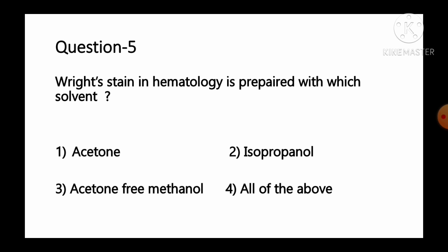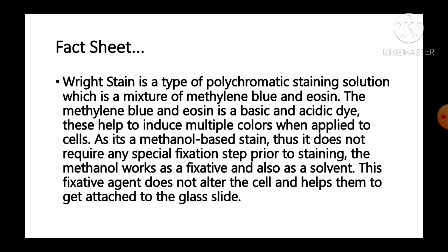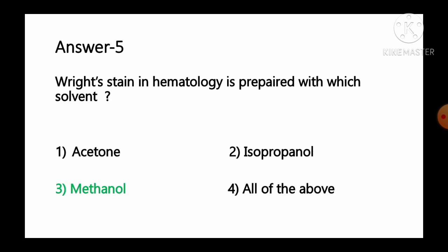Question number 5: Wright stain in hematology is prepared with which solvent? Options: 1 acetone, 2 isopropanol, 3 acetone-free methanol, 4 all of the above. Wright stain is a type of polychromatic staining solution which is a mixture of methylene blue and eosin. It is a methanol-based stain, thus it does not require any special fixation steps prior to staining — the methanol works as both a fixative and a solvent. So option number 3, methanol, is the correct answer.